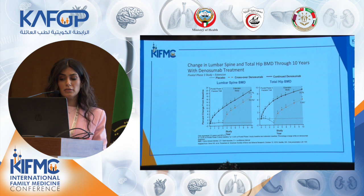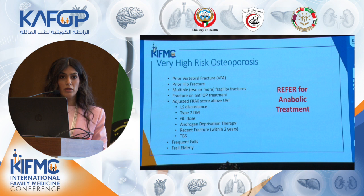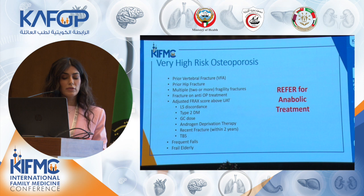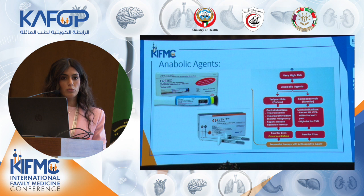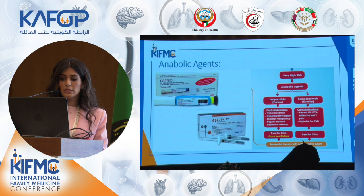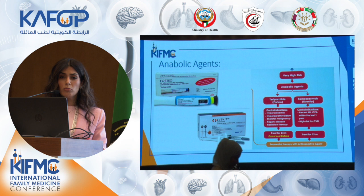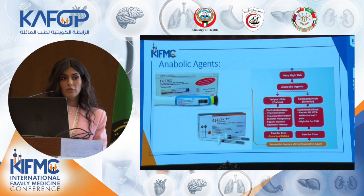For very high-risk patients referred for anabolic treatment, two medications are available. The anabolic agents include teriparatide, which is a parathyroid hormone analog, and romosozumab, a monoclonal antibody with a dual effect — it increases bone formation and decreases bone resorption. Teriparatide is given daily subcutaneously for up to two years, then followed by anti-resorptive agents. Romosozumab is given as two injections monthly for one year, then followed by anti-resorptive agents.